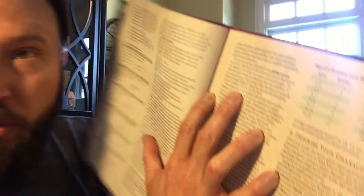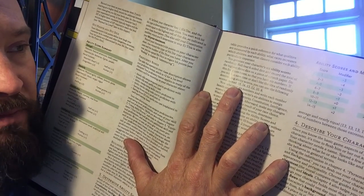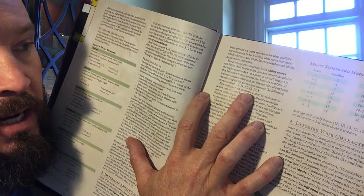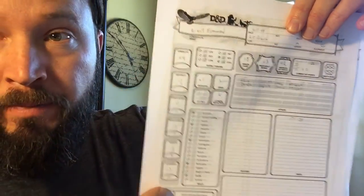So there's a couple of places. One is called what people tend to call the standard array. It is a standard set of scores, and it's right here in the book. And basically you assign, rather than rolling for them, you assign a 15, 14, 13, 12, 10, and an 8. And those are six scores, and you would assign them to each of your abilities here, depending upon kind of what it says about your class.